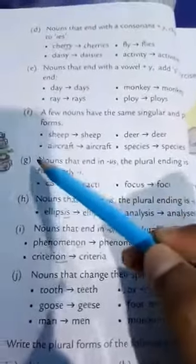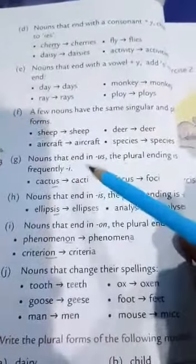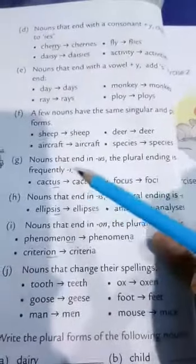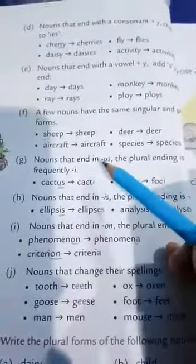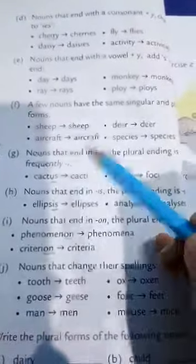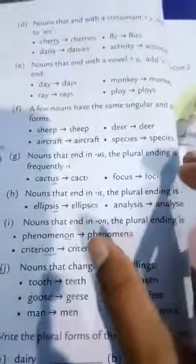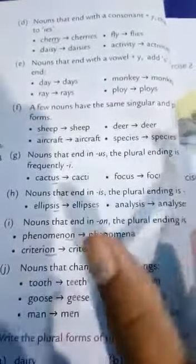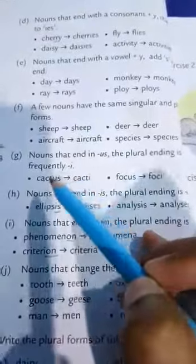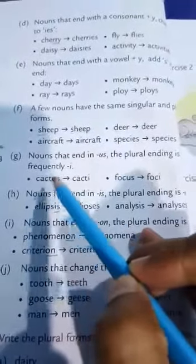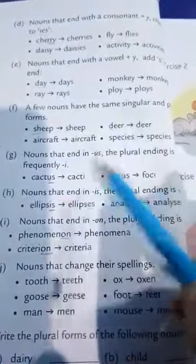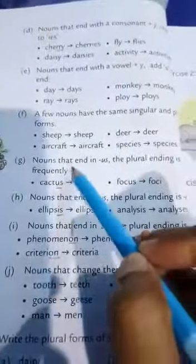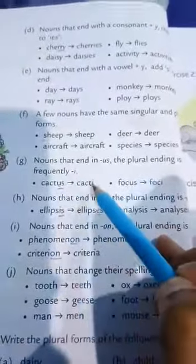We will start from rule G. Nouns that end in -US: the plural ending is frequently -I. The rules given here are not applied to every noun — you can also get exceptions. If a singular noun ends in -US, in the plural you remove -US and add -I.